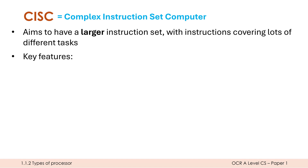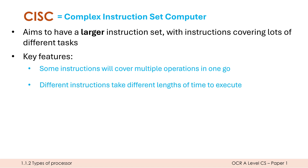The key features of CISC are really the opposite of RISC: some instructions cover multiple operations in one go — a multiply instruction, for example, covers multiple additions. One slightly awkward aspect of CISC is that different instructions may take different numbers of clock cycles to execute. A simple add might take one clock cycle, but raising a number to a power might take three clock cycles.